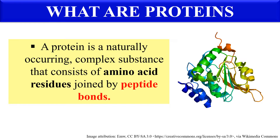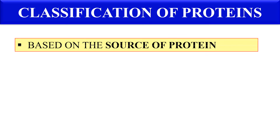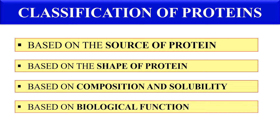These amino acids are joined with each other through a peptide bond. Proteins are present in all living organisms and include many essential biological molecules such as enzymes, hormones, and antibodies. Now, proteins can be classified on the basis of their source, their shape, their composition and solubility, and on the basis of their function. Let's discuss all of these classifications one by one.